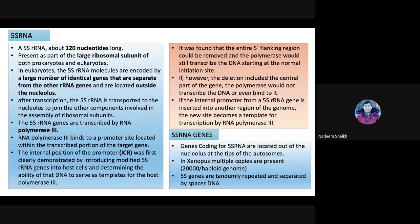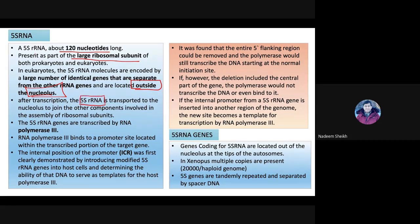5S RNA is a small RNA with a length of about 120 nucleotides. It is present in the larger ribosomal subunit of both prokaryotes and eukaryotes. Importantly, 5S RNA is transcribed outside the nucleolus — not the nucleus, but specifically the nucleolus — and the genes are located at the tips of autosomes.